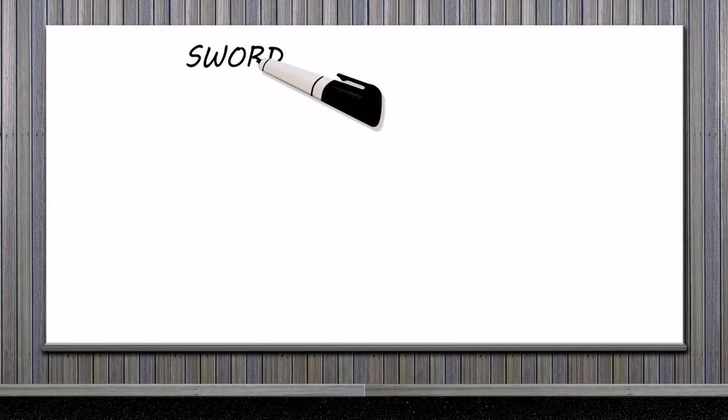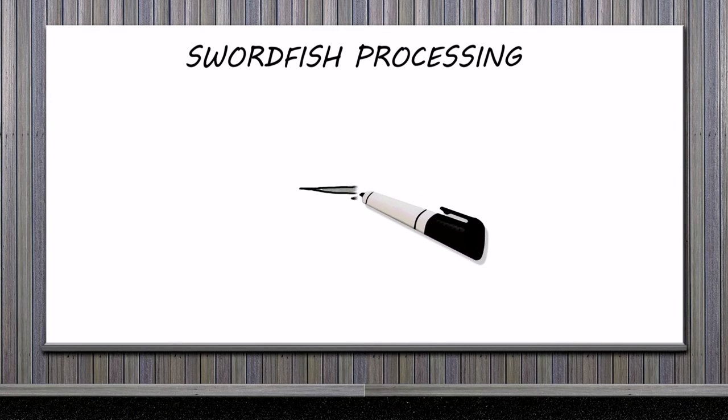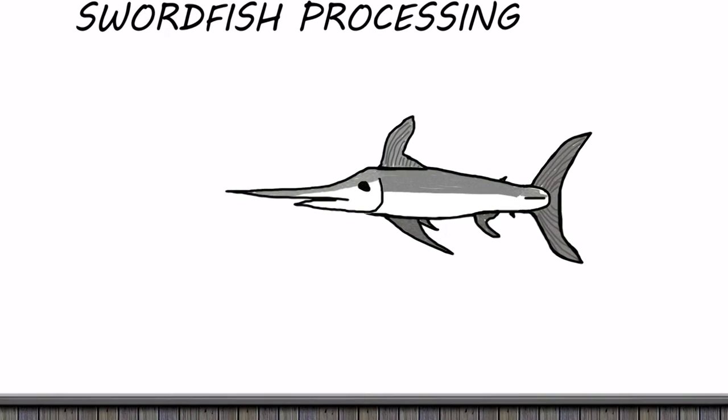Let's pull this together with some examples. We'll start with a raw ready-to-eat product and then look at two cooked ready-to-eat products. This firm processes swordfish that will be consumed either raw in sushi or cooked by the consumer, and the firm develops a flow diagram for this process.